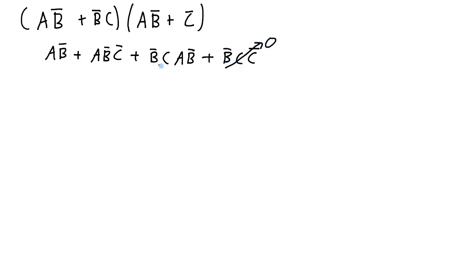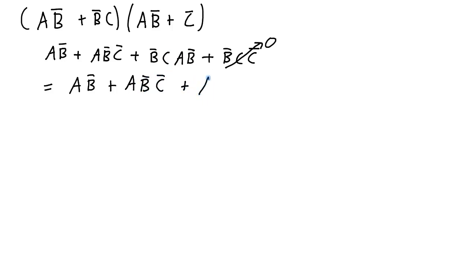I don't need the duplicates of the NOT b term. So this then will be equal to a·NOT b, OR with a·NOT b·NOT c, OR with — I'll also rearrange this — a·NOT b·c.